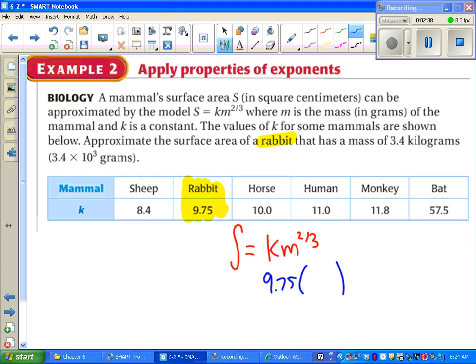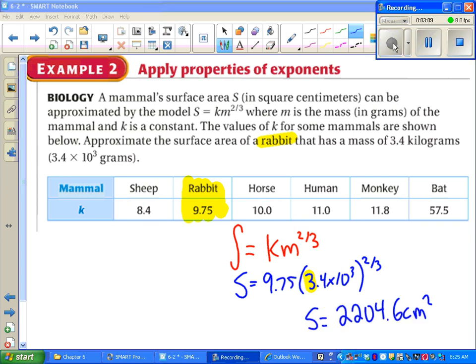Except we don't want to put 3.4, we want to put 3.4 times 10 to the 3rd because the formula requires grams, not kilograms. And we have to raise that to 2/3rds. That will give us the surface area of the rabbit. From here, it's just a case of putting this into your calculator. Go ahead and try that on your own, see if you get the same answer as I do. Don't forget your units.